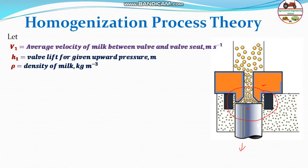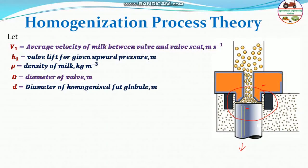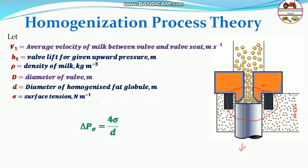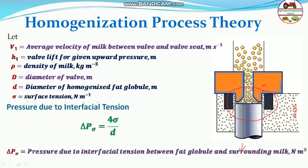Let rho be the density of milk in kg per cubic meter, D be the diameter of the valve, and small d be the diameter of the homogenized fat globule. If we know the surface tension of milk — let it be sigma — then the change in pressure due to interfacial tension will be equal to 4 times surface tension divided by d, where d is the diameter of the fat globules after homogenization. So del_p_sigma is the pressure due to interfacial tension between the fat globules and the surrounding milk.